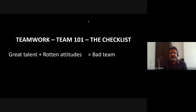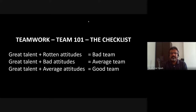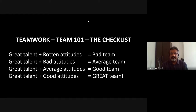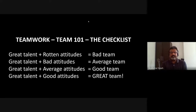Great talent plus a rotten attitude results in a bad team. Great talent with a bad attitude gives an average team. Great talent with an average attitude gives a good team. Great talent plus good attitude results in a great team. What is common is great talent — what is variable, what is changing in this equation, is the attitude. With the change in attitude, the quality of the team also changes.